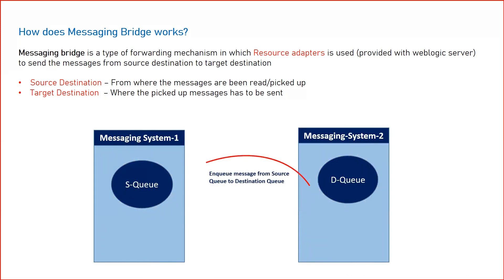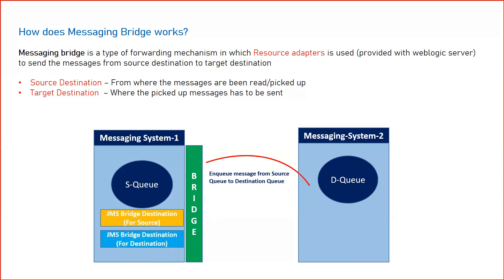We have two messaging systems where a message from the source queue needs to be sent to the destination queue. The message gets posted in the source queue and is sent to the destination queue via the bridge. Because we have two queues — one for source and one for destination — we need to do a mapping between them. For that we define two JMS Bridge Destinations: one for source and one for destination.